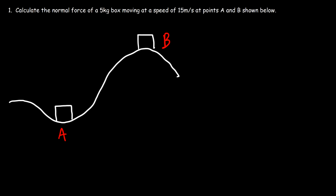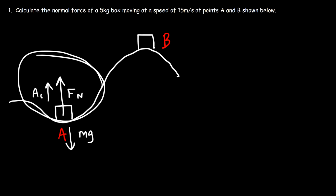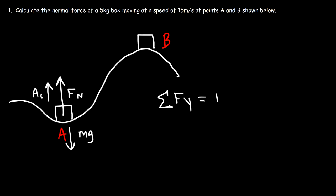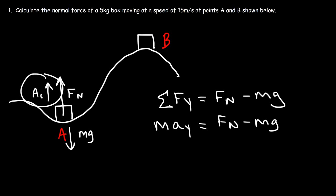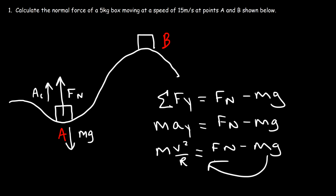At point A, the normal force points in the upward direction and we have a downward weight force. The centripetal acceleration points in the positive y direction, towards the center of the circle. The net force in the y direction for position A is the upward normal force minus mg, and by Newton's second law this equals mass times centripetal acceleration, which is v squared over r. So the normal force at point A is the sum of the centripetal force and the weight force mg.